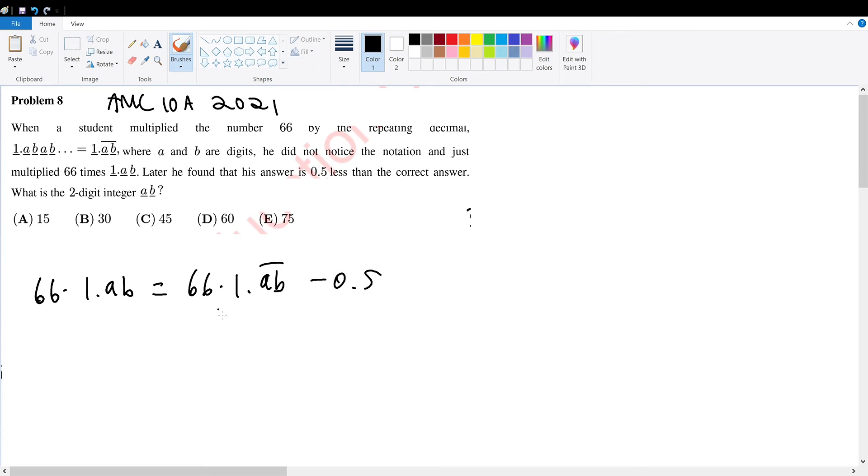We can isolate 0.5 on the left-hand side. So 0.5 would be equal to 66 times 1.AB repeating minus 66 times 1.AB. We can factor out 66 to get 1.AB repeating, that's supposed to be a repeating sign, minus 1.AB.